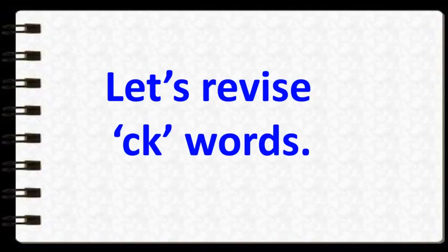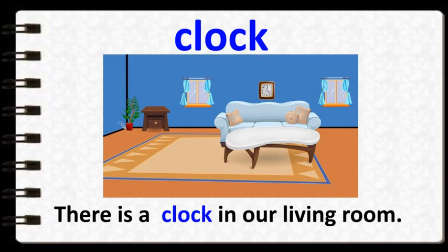Let's revise CK words now. The word is clock. Clock is a machine which helps us to know the time. It can be used in a sentence like: there is a clock in our living room. You can see the picture of a living room and there is a clock on the wall.